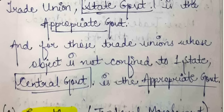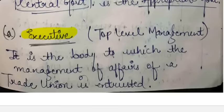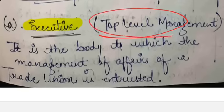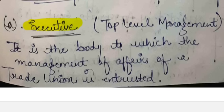Under Section 2(a), 'executive' means the top-level management of the trade union. It is the body to which the management of affairs of the trade union is entrusted — the body that deals with the entire purview of how the trade union will work, what is its working, what is its extent, and how all the affairs of the trade union will be managed.